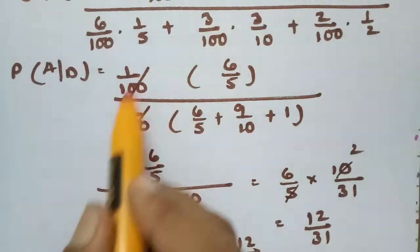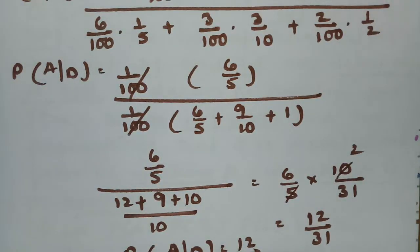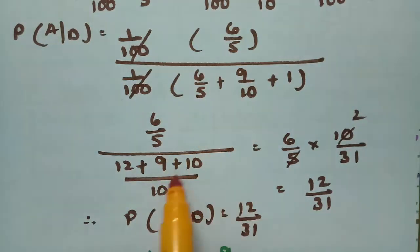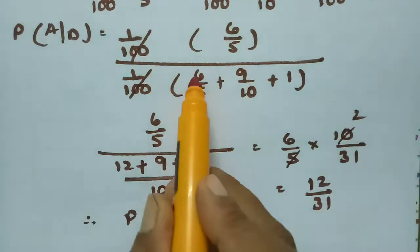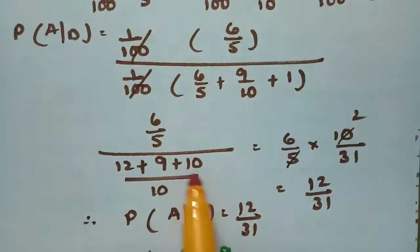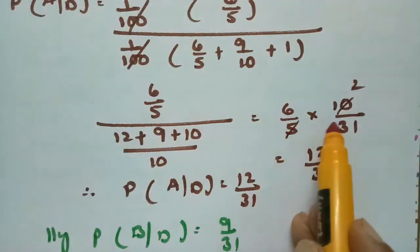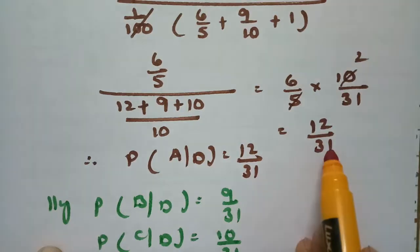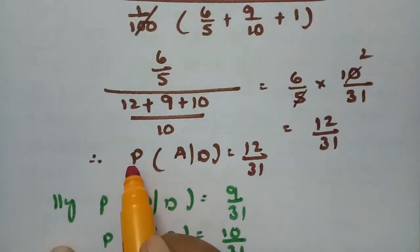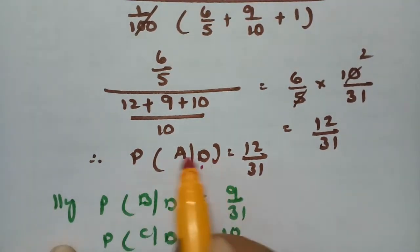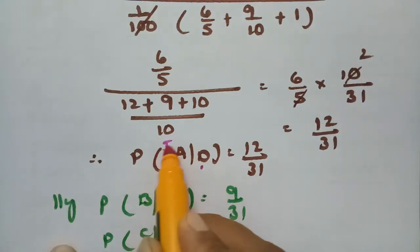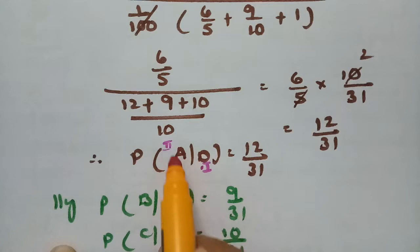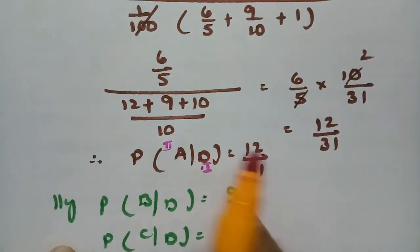After cancelling common terms and taking LCM of 10 in the denominator, we get 12 + 9 + 10 = 31. So P(A|D) = 6/5 × 10/31 = 12/31. The probability that the defective bolt is from machine A is 12/31.